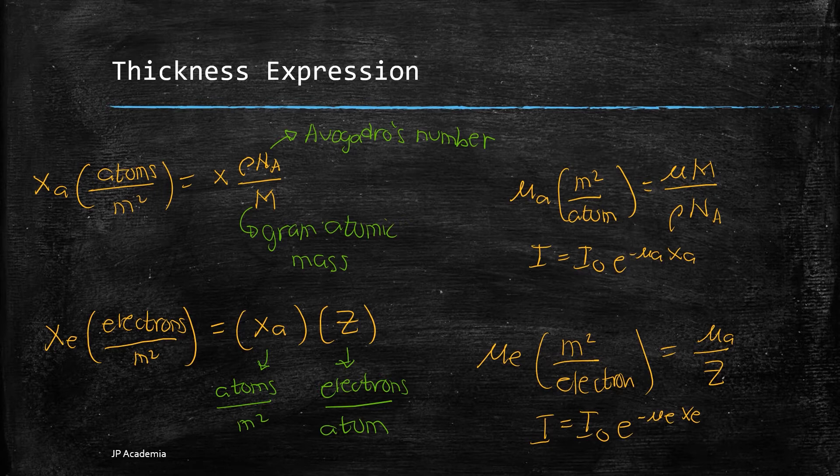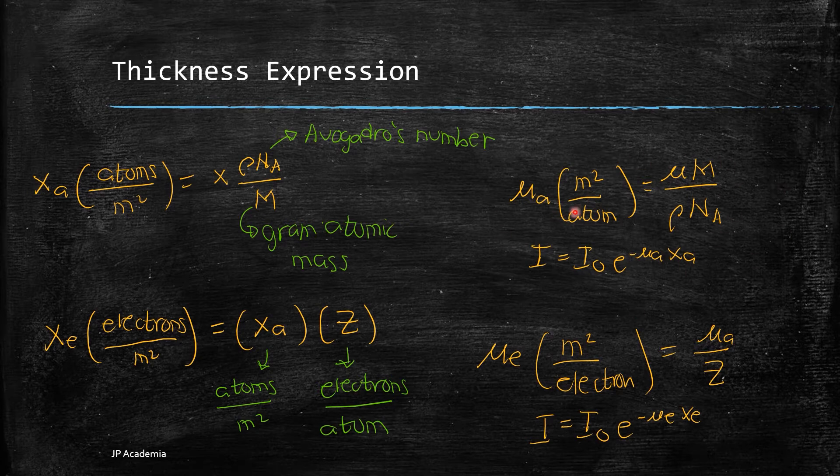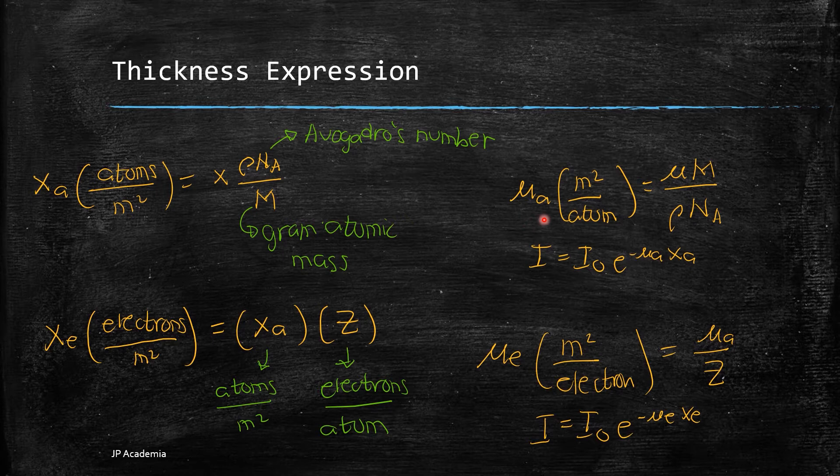So I'll bring out my laser pointer. So we have this expression for mu sub a for the atomic attenuation coefficient and we have mu sub e for the electronic attenuation coefficient.